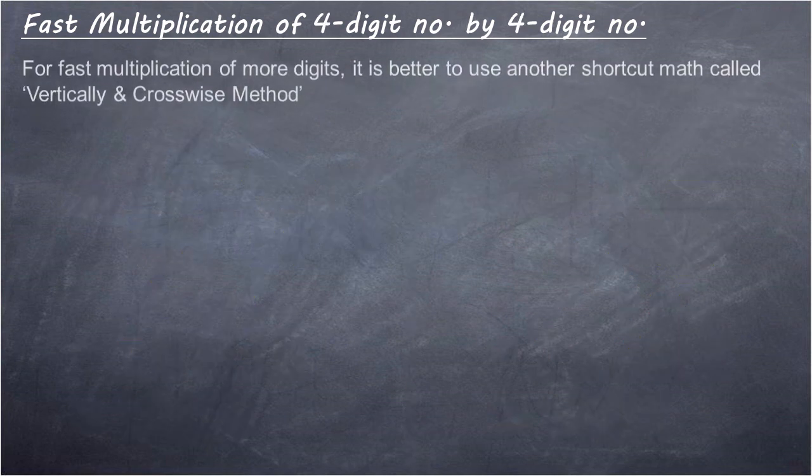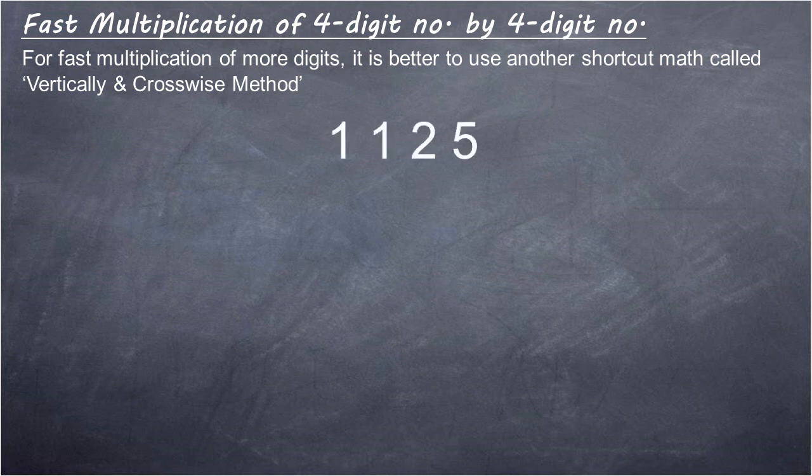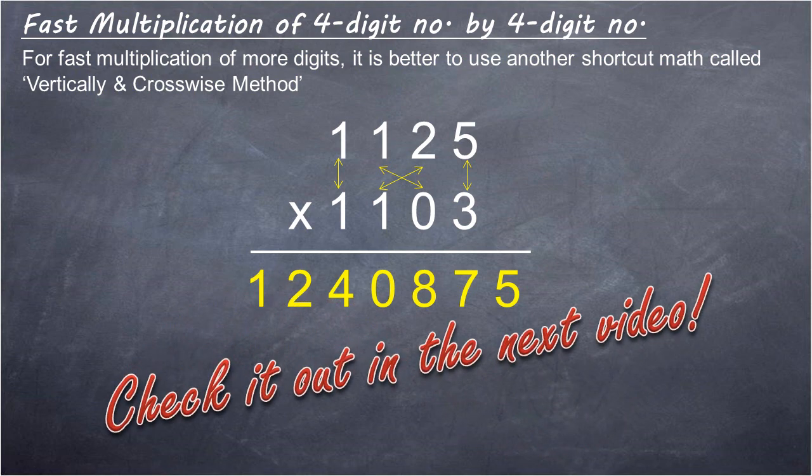For fast multiplication of more digits, it is better to use another shortcut math called vertically and crosswise method. Check it out in the next video.